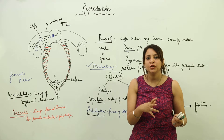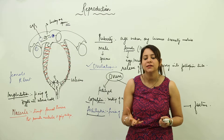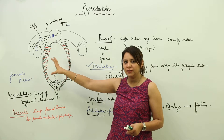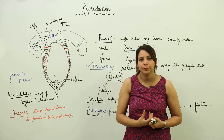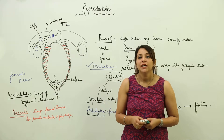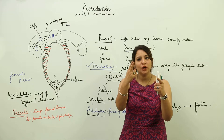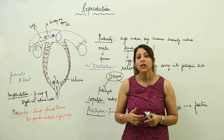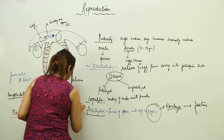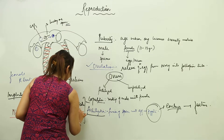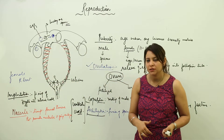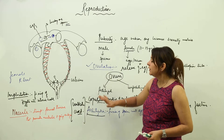The placenta is a temporary tissue that provides nutrition to the growing embryo. It is a connection of blood vessels between the embryo and the mother, so the embryo can get nutrition from the mother's body. The point of connection between the placenta and the fetus is the umbilical cord. When a baby is born, the umbilical cord is cut and it persists in the child as the navel.